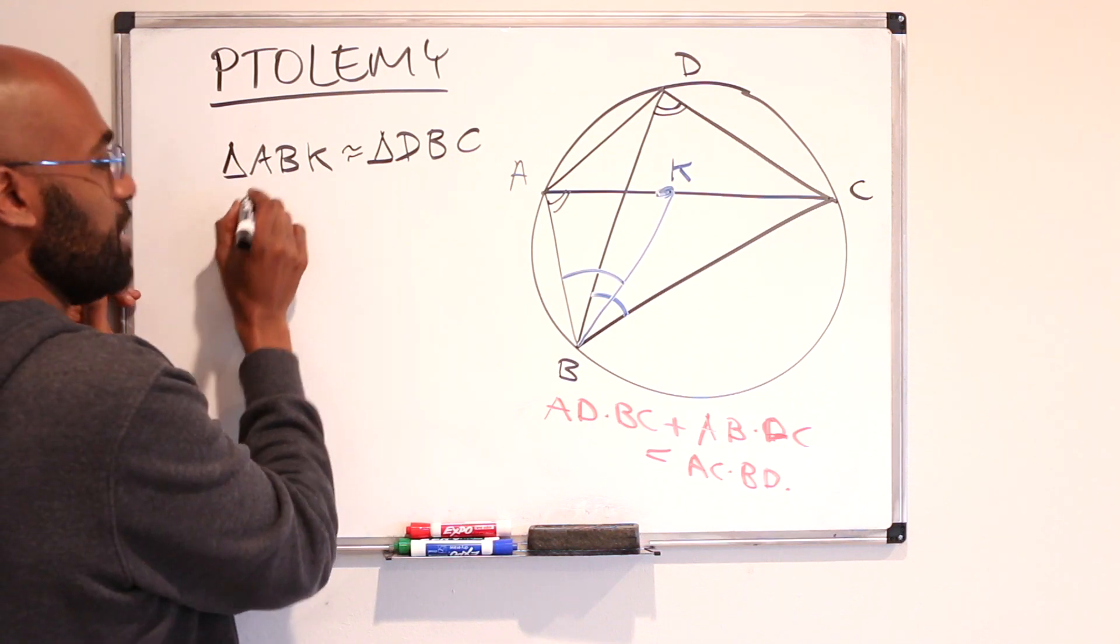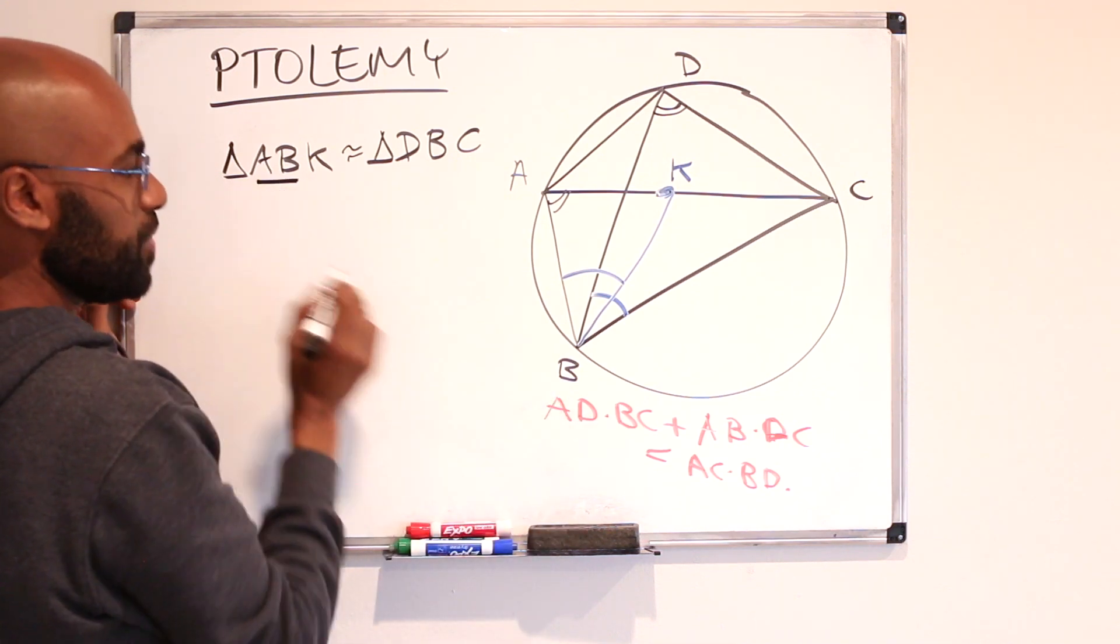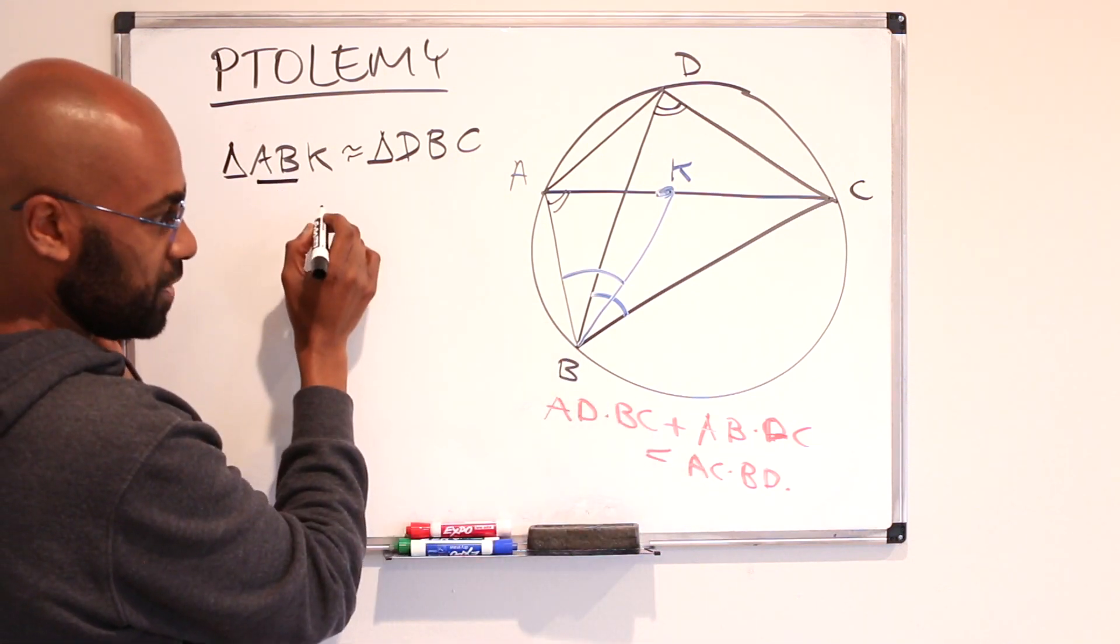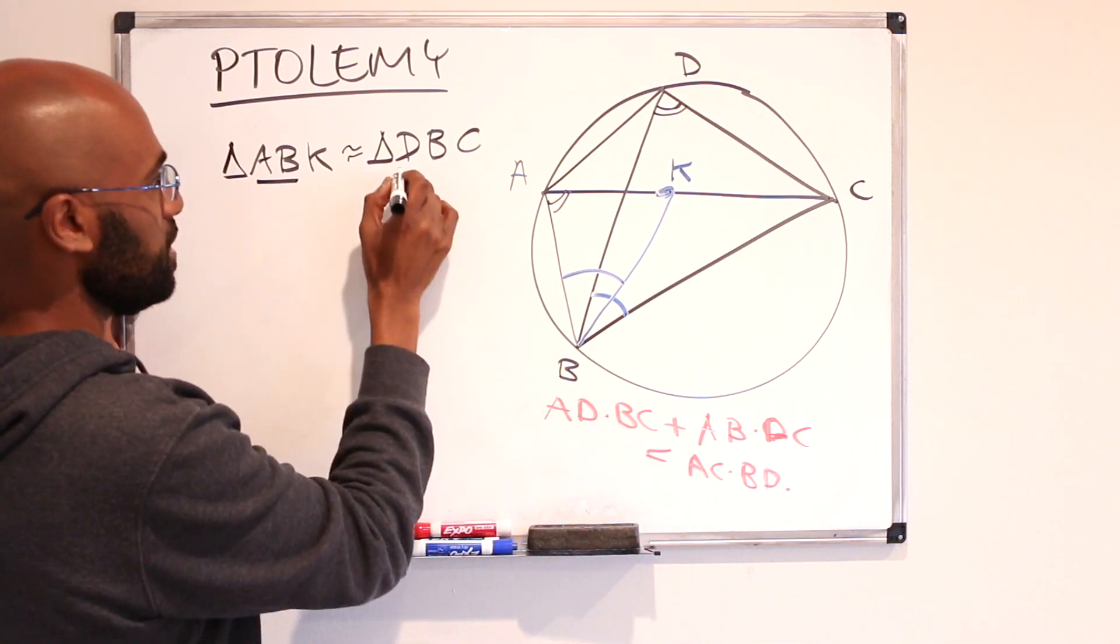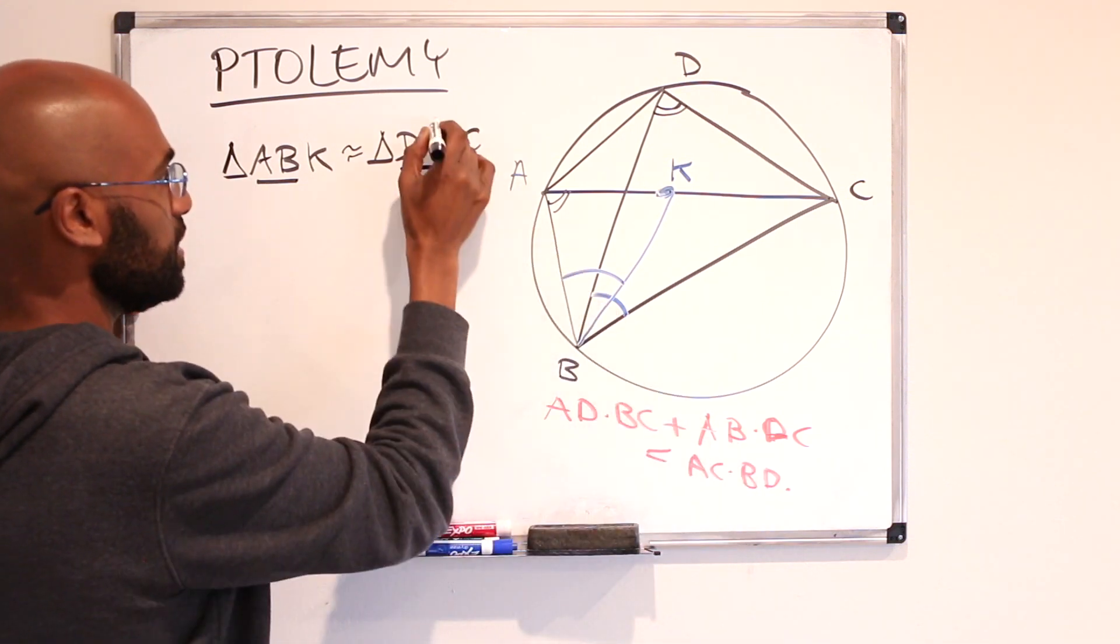So one of the things that we have involved is AB. Another thing we have involved is BD and then we also have DC.